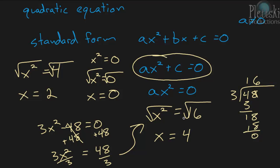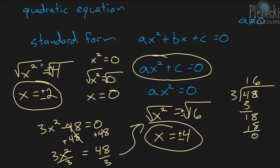So our answer is 4. But remember, when you take the square root of a number, you get the plus or minus — the positive and negative square root. So our answer is going to be plus or minus 4. And going back to the earlier example, that one should also have been plus or minus the square root of 4, so the answer should have been plus or minus 2. The reason we use plus or minus is because we're solving x squared equals 4, so we need both the positive and negative square root.